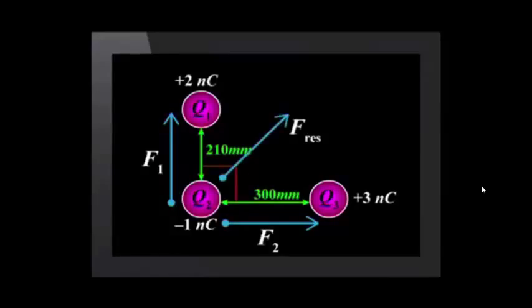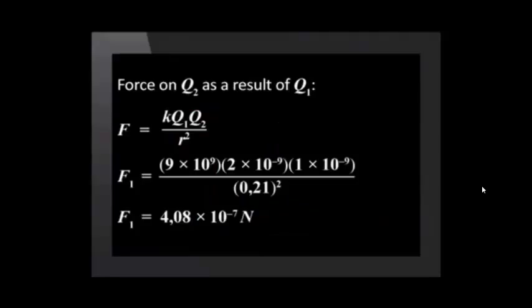The question asks for the resultant electrostatic force on Q2 as a result of the other two charges. We first use Coulomb's law to calculate the electrostatic force F1. To calculate the force on Q2 as a result of Q1, we substitute the charge into the equation. This gives us F1 as 4.08 times 10 to the negative 7 Newtons. This force acts upwards, since the charges are in a vertical plane.